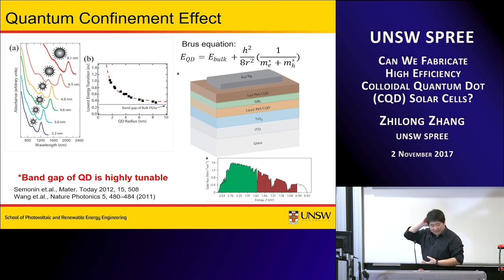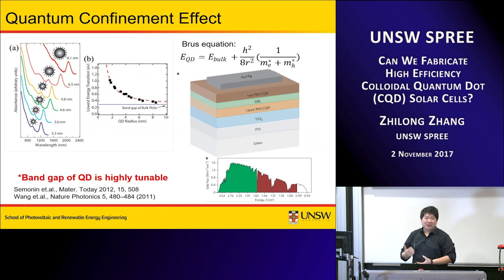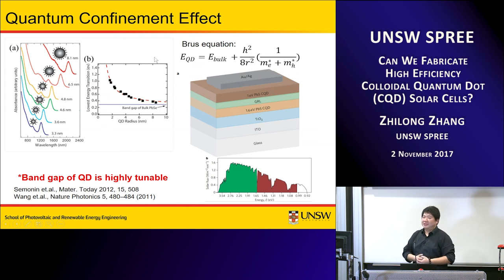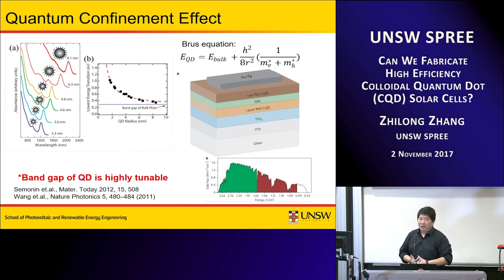Perhaps the most well-known property of colloidal quantum dots is quantum confinement — in fact it is also why we call them quantum dots. The band gap of the material increases when the size of the particle decreases beyond the exciton Bohr radius of the corresponding bulk material. As the particle size decreases, the absorption spectrum undergoes a blue shift, indicating an increase in band gap. This is one of the first motivations for applying quantum dots in photovoltaics, because we can make multi-junction solar cells based on the same material simply by adjusting particle size.